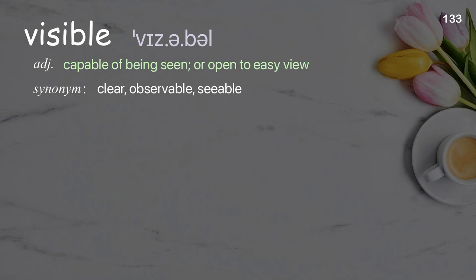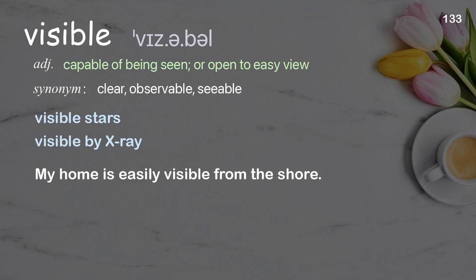Visible: Capable of being seen or open to easy view. Examples: visible stars, visible by x-ray. My home is easily visible from the shore.